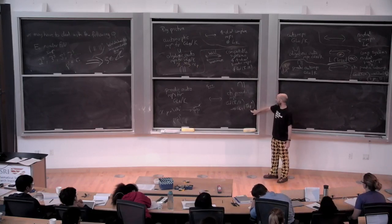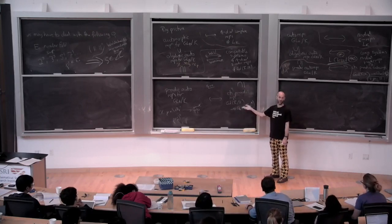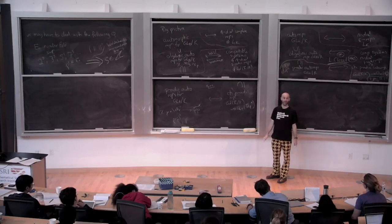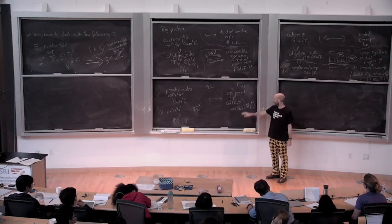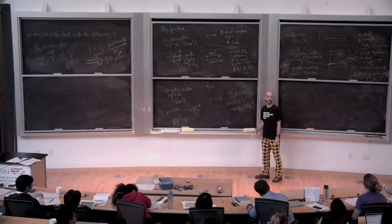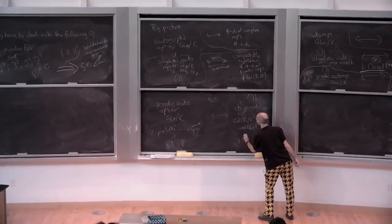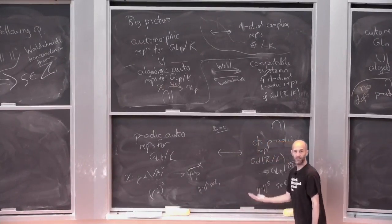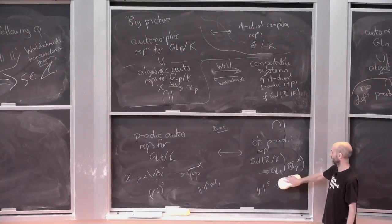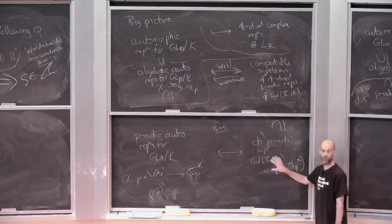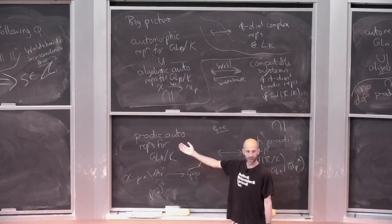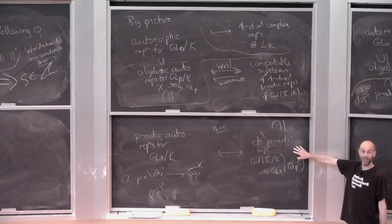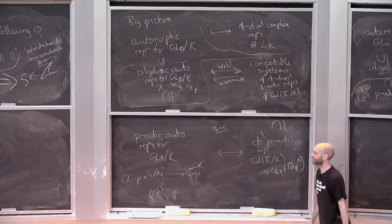Given a representation rho from Gal(k-bar over k) to GL_n(E) where E over Q_p is finite, if this is continuous, semi-simple, unramified outside a finite set of places, and potentially semi-stable — that's a p-adic Hodge theory condition saying the behavior of rho restricted to the absolute Galois group of k_p for p above p — then conjecturally this should be part of a compatible system. That's the Fontaine-Mazur conjecture.